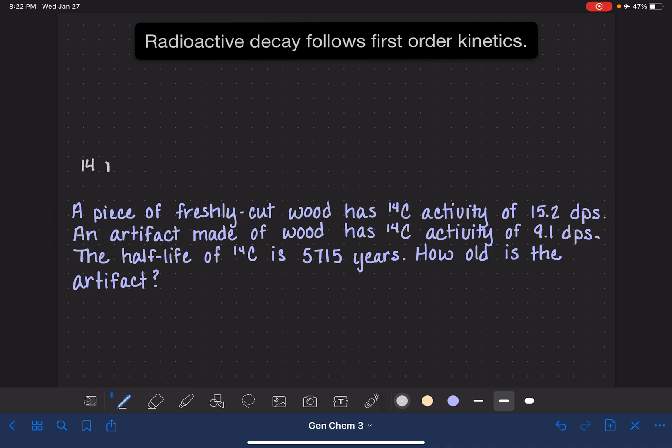For example, carbon-14 is radioactive, and when it decays, it emits a beta particle, an electron, and that leaves a nitrogen atom, which is very stable. So this is a chemical equation that describes the radioactive decay of carbon-14.